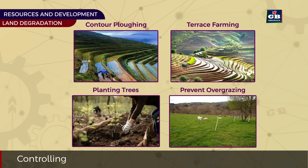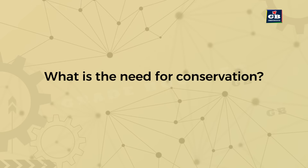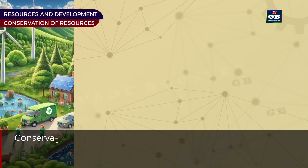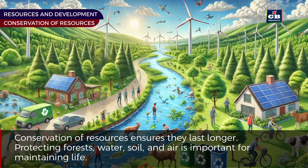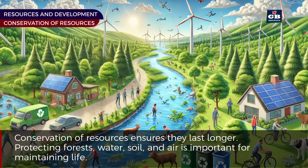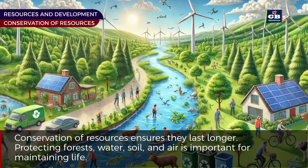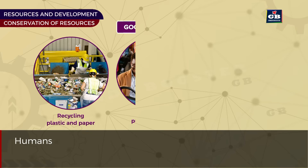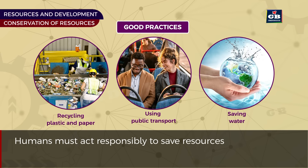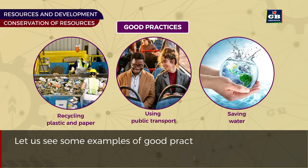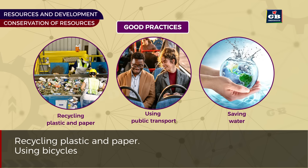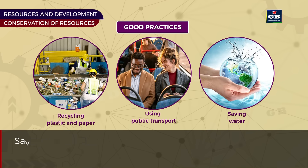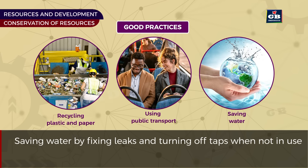Preventing overgrazing by controlling the number of grazing animals also prevents soil erosion. Conservation of resources ensures they last longer. Protecting forests, water, soil, and air is important for maintaining life. Humans must act responsibly to save resources. Good practices include recycling plastic and paper, using bicycles or public transport to save fuel, and saving water by fixing leaks and turning off taps when not in use.